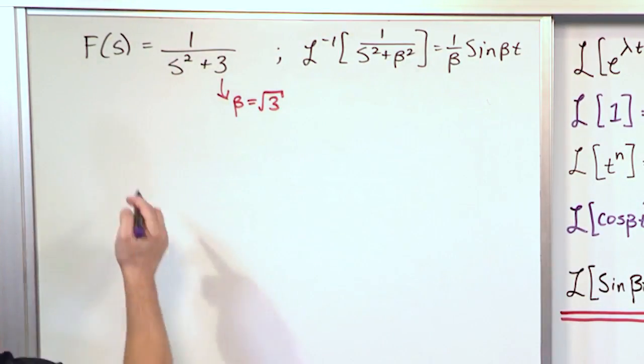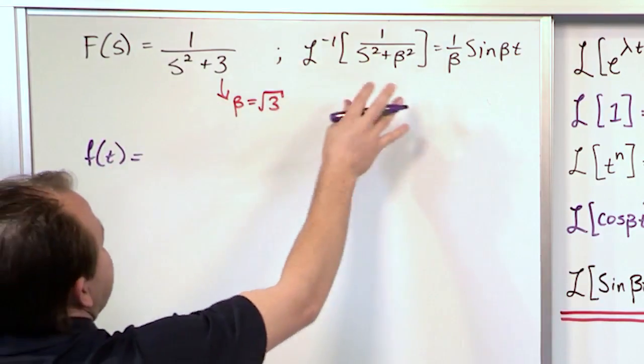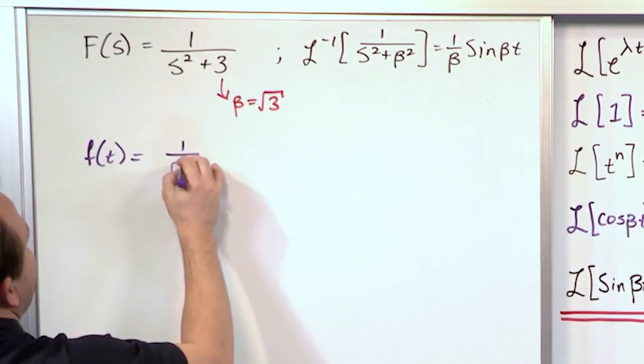All right. So knowing that, then we can just write the answer down directly. And we can say, well, if this is true, then 1 over square root of 3, meaning 1 over beta here, times the sine of square root of 3 times t.